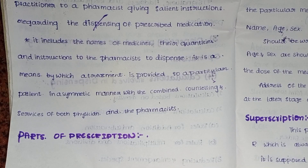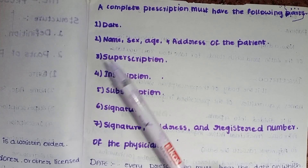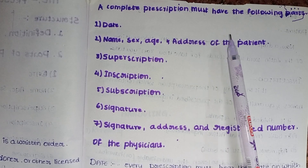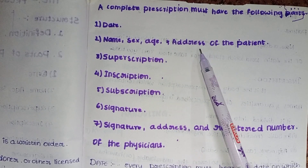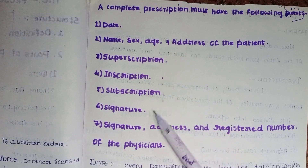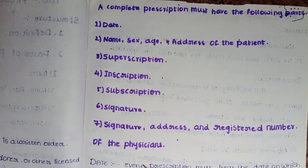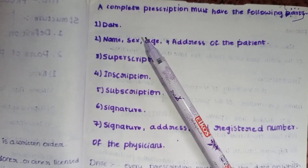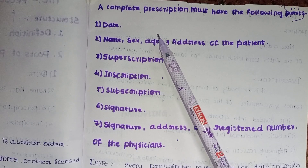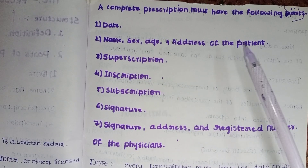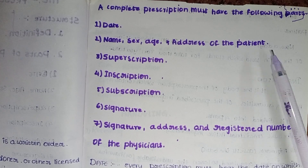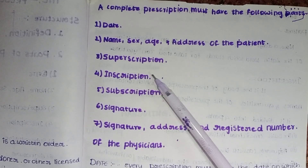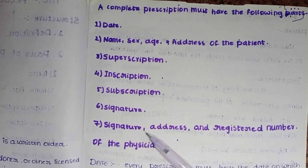Second one is the parts of prescription. A complete prescription must have the following parts. The first one is the date — whenever the doctor's appointment. Name — the person's name, age, sex, and address of the patient. And superscription, inscription, subscription, signature. And signature, address, and registration number of the physicians.